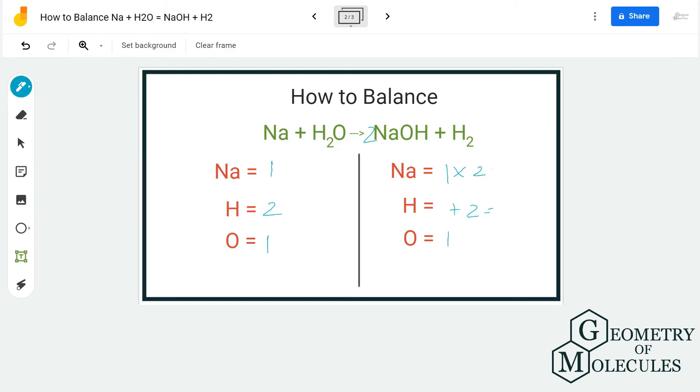So now we have to update the product side. Now we have two atoms of sodium, and for hydrogen we have two plus two, four. For oxygen we have two. So the product side is now updated.